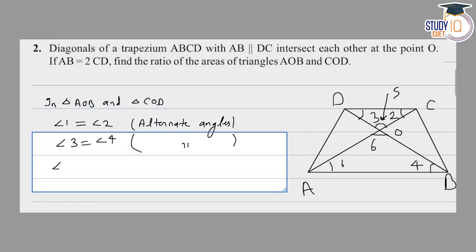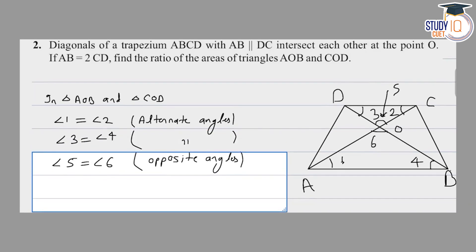Next, angle 5 is equal. Now the opposite angles are equal. We can see the opposite angles.